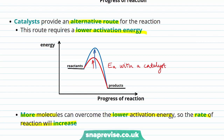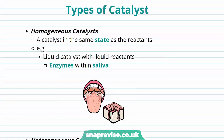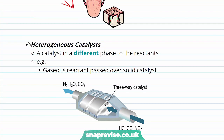There are two broad categories of catalyst. The first is a homogeneous catalyst — a catalyst in the same state as the reactants. For example, a liquid catalyst with a liquid reactant. A good example you'll be familiar with are the enzymes within your saliva, which catalyze reactions that break down molecules of food that you consume.